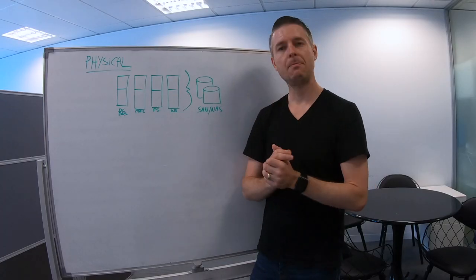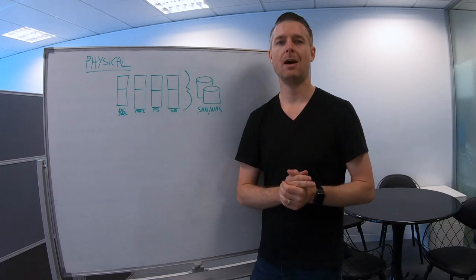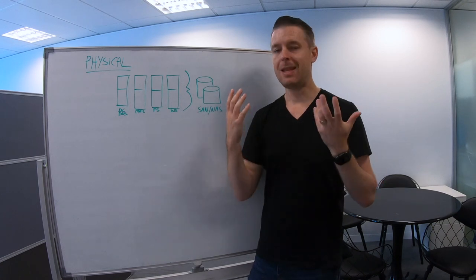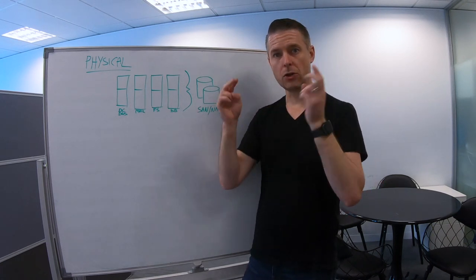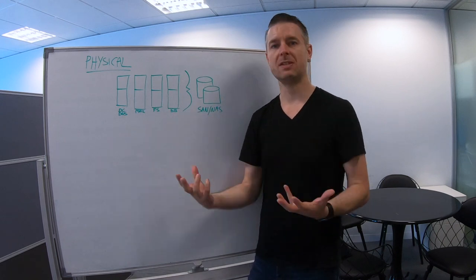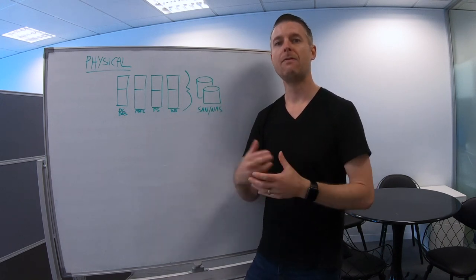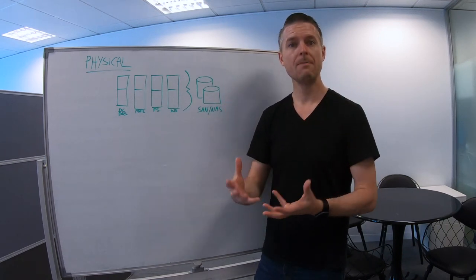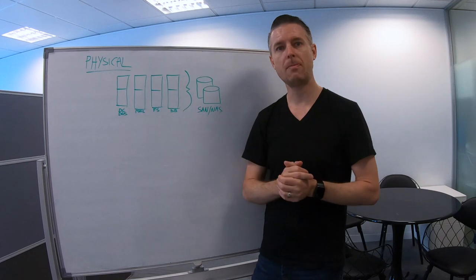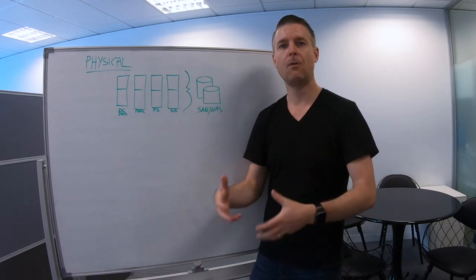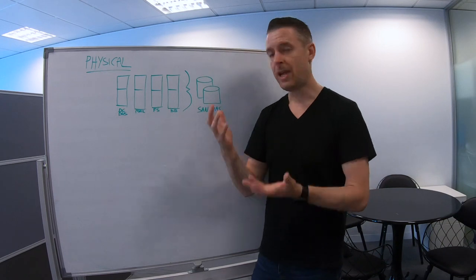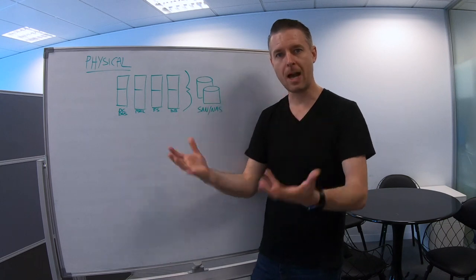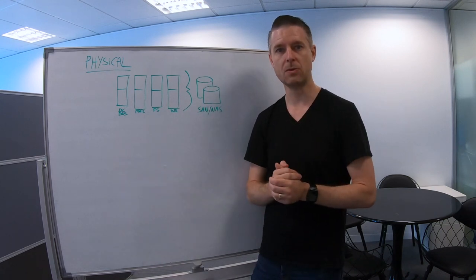This is an example of what a physical server infrastructure would look like. Physical servers have been around for a very long time. In the olden days there was no such thing as a virtual server — they were all physical. A physical server is literally like a computer that has a lot more processing power and can perform a lot better than your average desktop. It is physical in the sense that you can physically see it, touch it, and open it up.